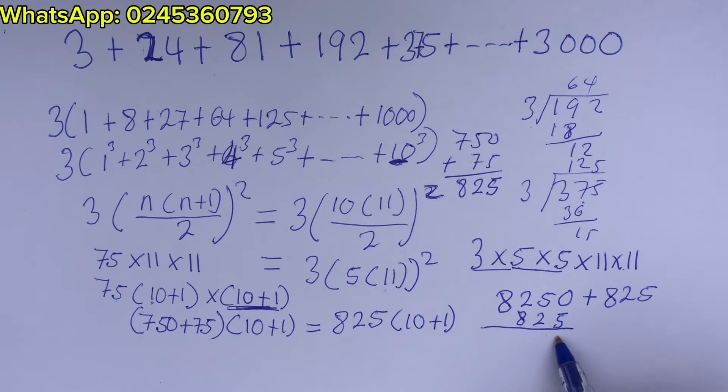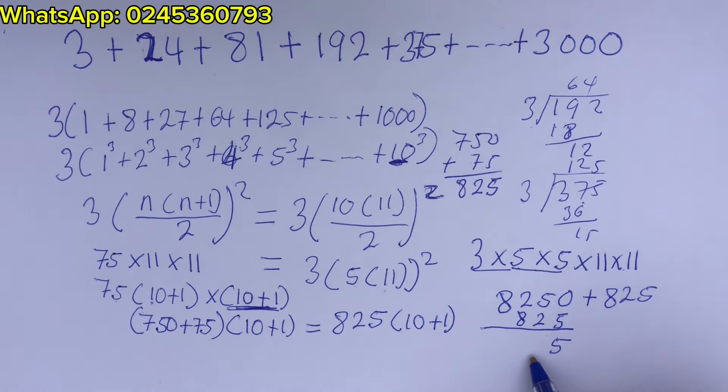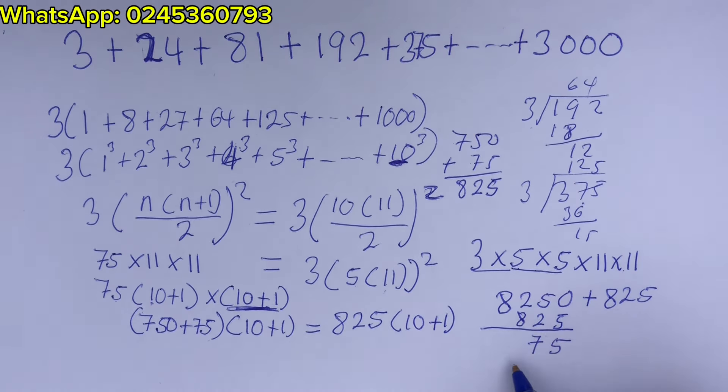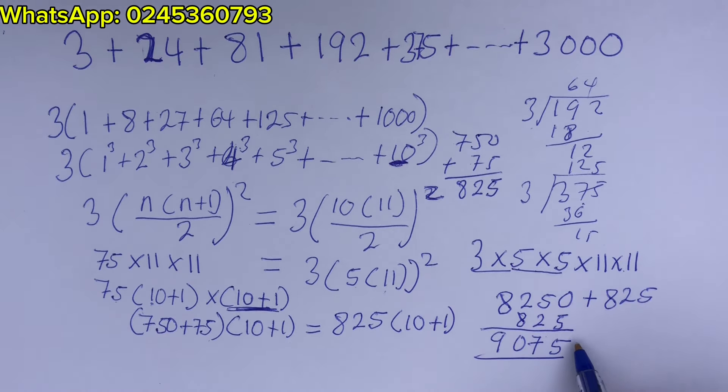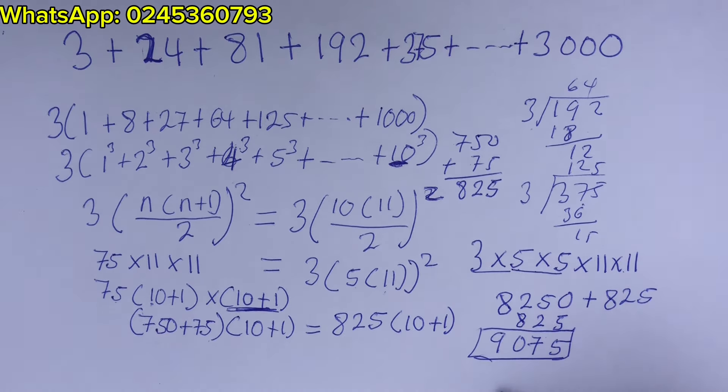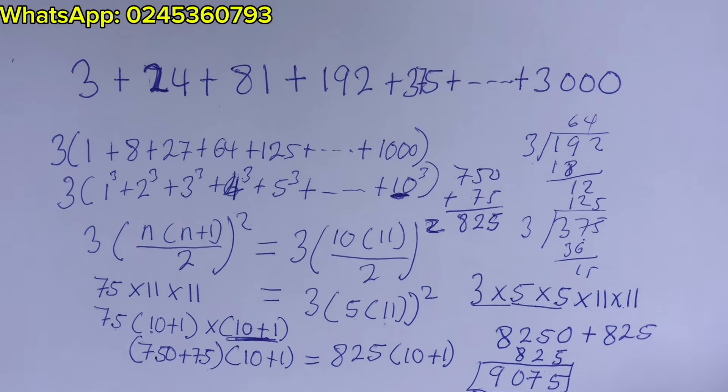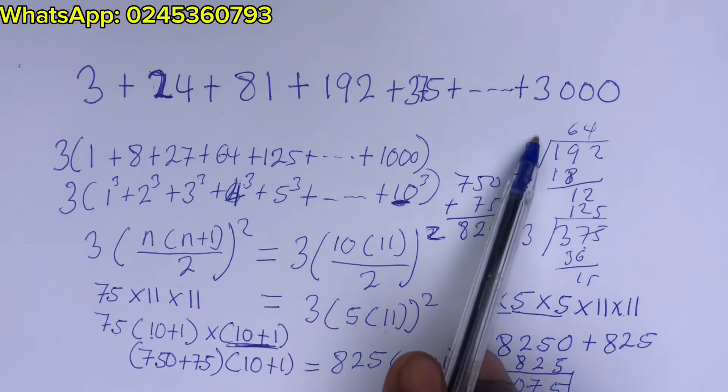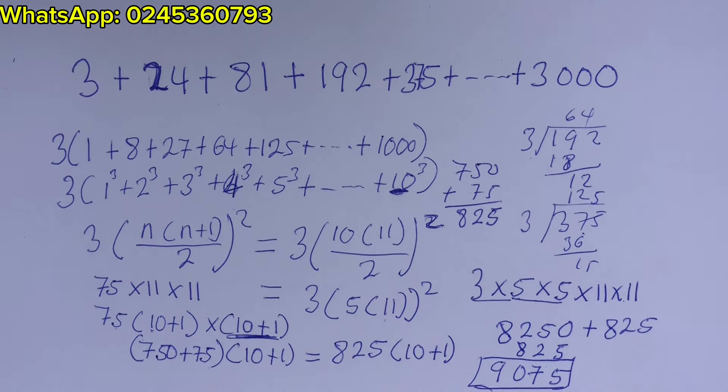So this will give us 5, 7 2 plus 8 is 10, 0 remember 1, 9. Wow. So we have 9,075 as the sum of what we have here in a very simple way.